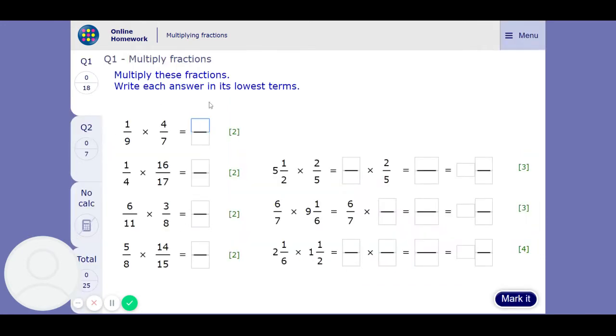So multiplying fractions, answering in their lowest terms. These are pretty straightforward as far as fractions go. You just have to multiply the top numbers, multiply the bottom numbers and then we'll check to see if we can simplify it. So 1 times 4 is 4 and 7 times 9 is 63. They don't simplify so that's as simple as it gets.